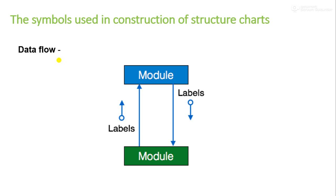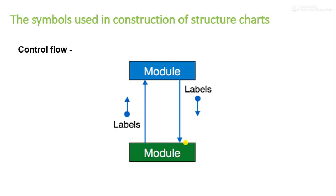Another type of symbol we can use in our structure chart is used to represent data flow. This symbol is used to represent the data flow, and the arrow represents the direction of data flow.